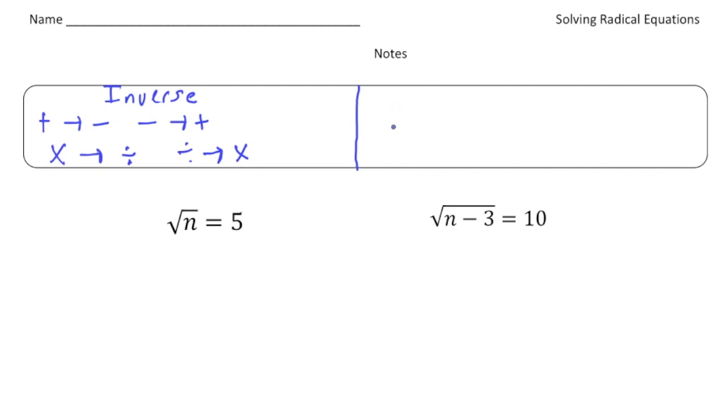But today we're gonna focus on the inverse of a radical, alright? So what you do to get rid of the radical sign is you have to square it. Alright, so n squared. So let me show you a couple examples.